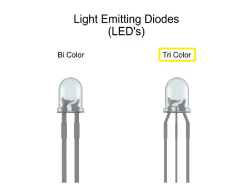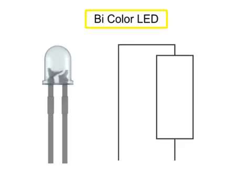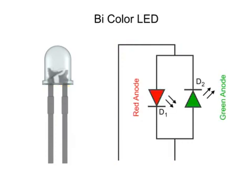Bi-color and tri-color light-emitting diodes, or LEDs, light up in a particular color depending on current flow direction. The basic bi-color LED has two terminals, and the LEDs are connected back-to-back, anode to cathode.